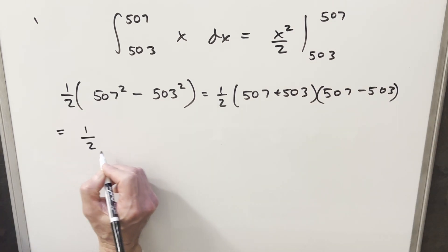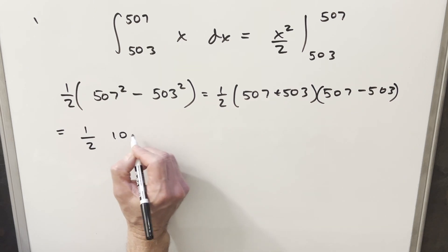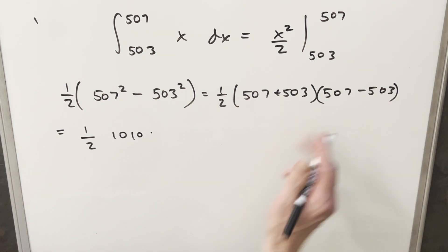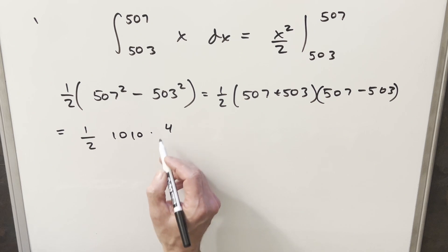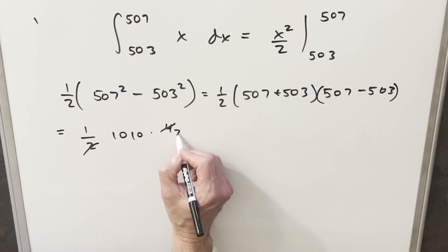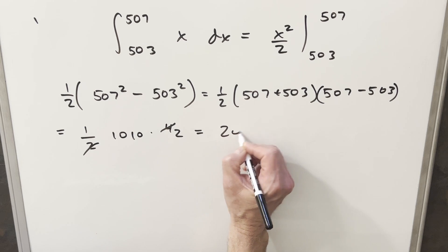But then simplifying, we have our one-half. This becomes 1010. And 507 minus 503, well, that's just four. But four divided by two, that just gives me two. Two times 1010, 2020.